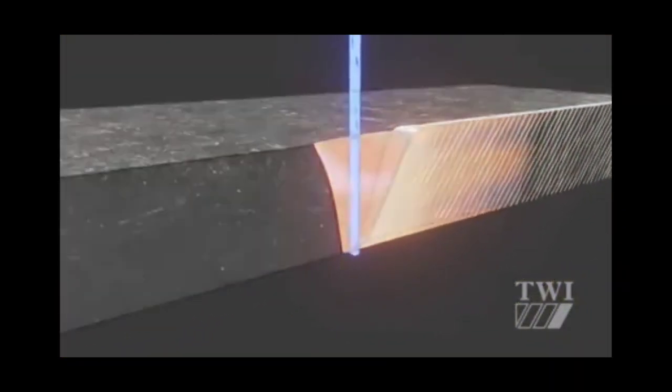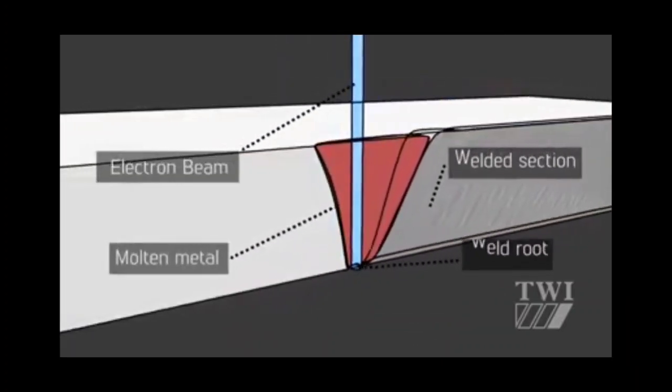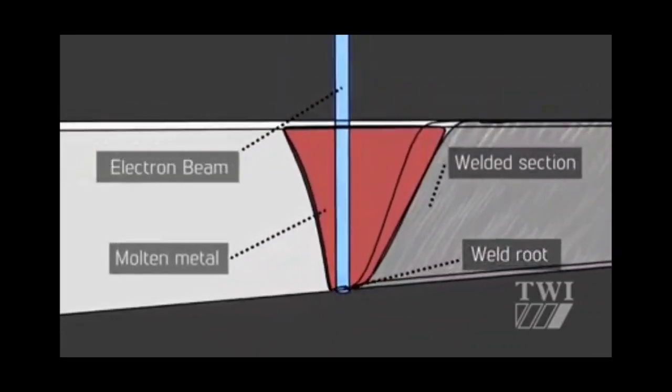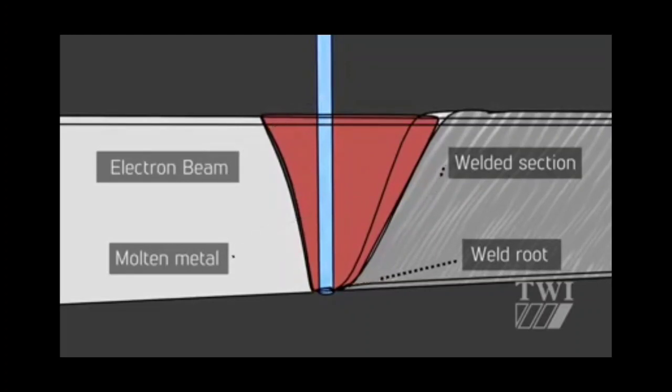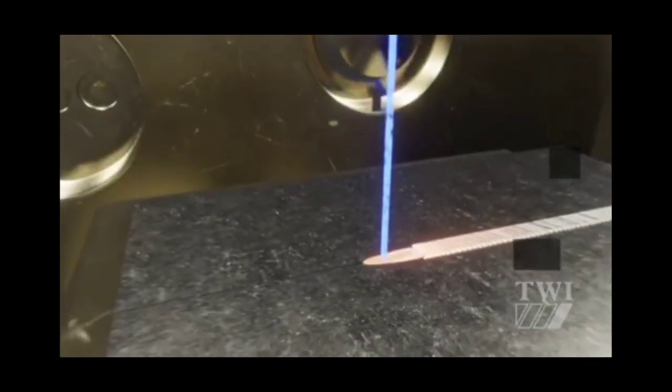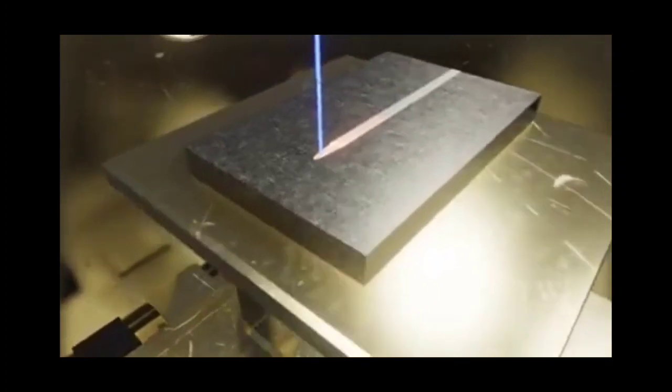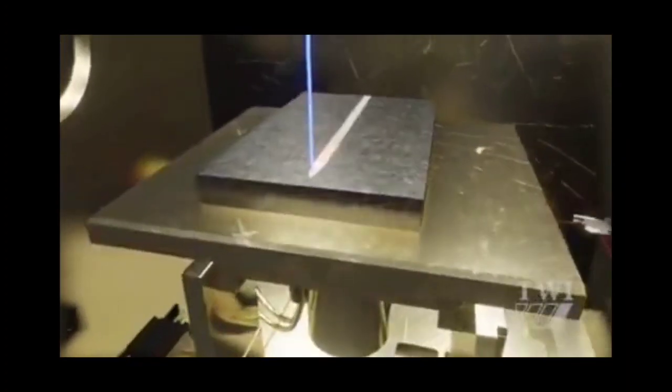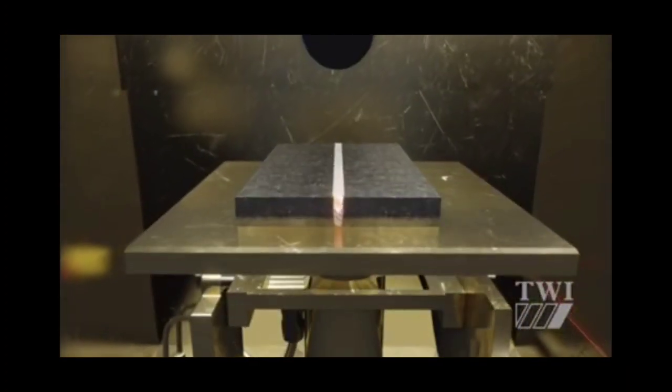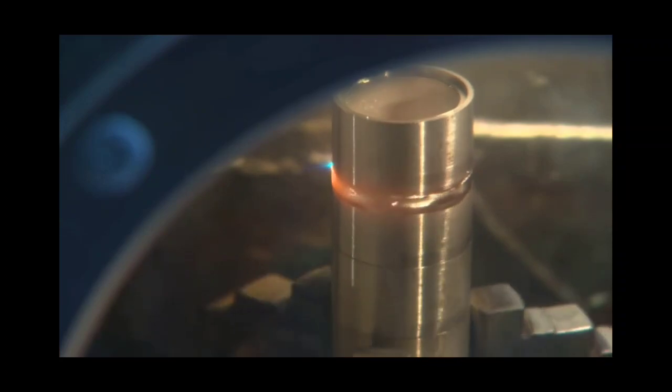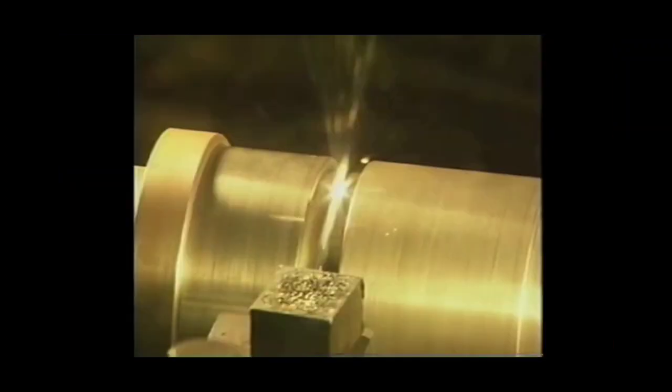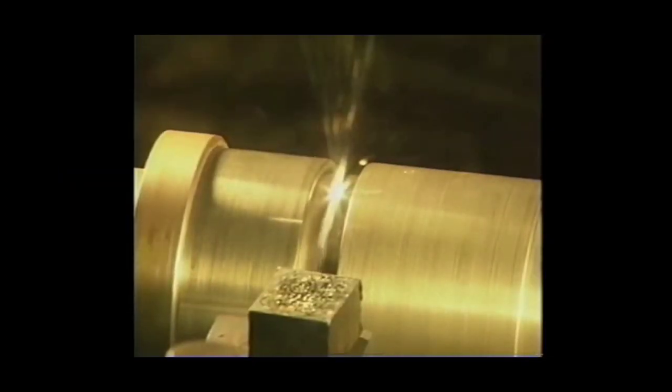Electron beam welding may be used for joining any metals, including metals which are hardly weldable by other welding methods. This includes refractory metals like tungsten, molybdenum, and niobium, and chemically active metals like titanium, zirconium, and beryllium. Electron beam welding is also able to join dissimilar metals.